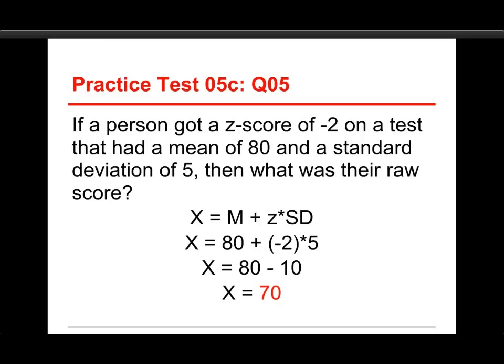And then the z-score is negative 2. I'm going to put that in parentheses, so just because we're adding something, we're going to multiply by a negative number. And then we multiply it to the standard deviation of 5. So we have 80 plus negative 2 times 5. And again, because of the order of operations, we do the multiplication before we do addition or subtraction. So we have 80 minus 10, and 80 minus 10 is 70. And that tells us that in this distribution, a person with a z-score of minus 2 would have gotten a score of 70 on the raw scale.